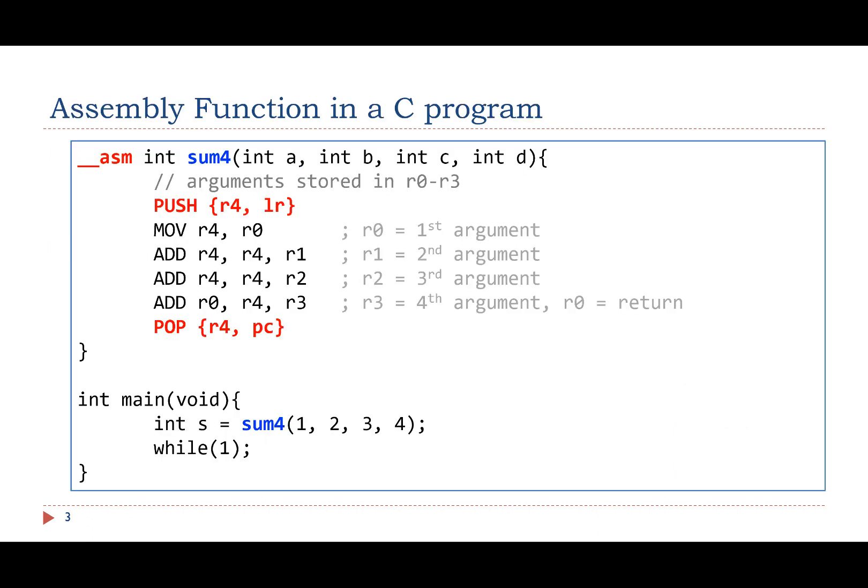A C program can use the keyword __asm to specify that a function is going to be implemented in assembly. The assembly implementation must follow the procedure call standard to receive arguments, preserve registers via the stack, and return the results to the caller.